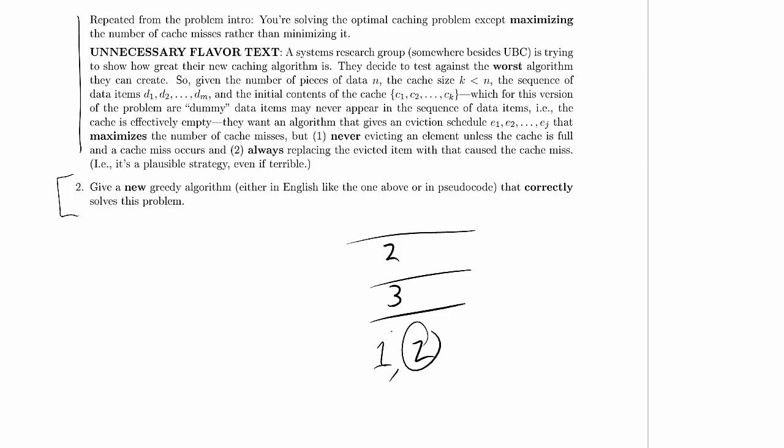And so we'd say, well, if we're just about to access two and we want to maximize cache misses, let's evict two and put one in instead. And then as soon as we get to two, then we'll get another cache miss. So that seems like the way to go to maximize cache misses.